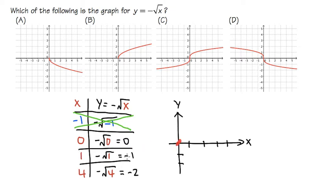And then 1, comma, negative 1. 1 for the x, negative 1 for the y, which is like that. 4, comma, negative 2. 1, 2, 3, 4 for the x, and 1, 2 for the y, down like this.